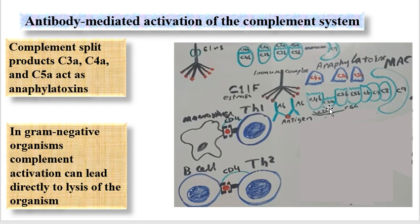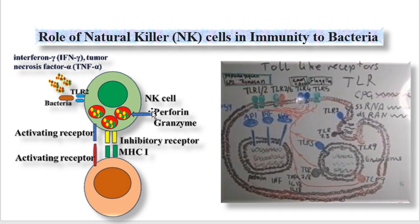Complement components C6, C7, C8, and C9 all bind sequentially, and this results in formation of the membrane attack complex or MAC. The MAC removes positive ions from the surface of the bacteria, leading to disruption of osmolarity. Plasma enters the bacteria, the bacteria swell, and eventually the bacteria rupture. This way of killing takes place in gram-negative organisms.